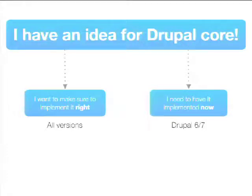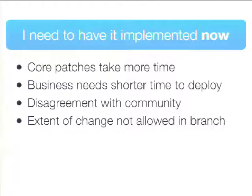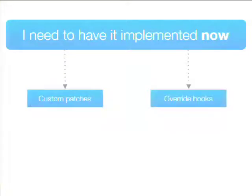The 'implement now' scenario applies if you don't have time for the core development process — you found an issue on your site and need it fixed right now, your business needs a shorter time to get fixes in, you have a huge disagreement with the community and there's no way to make it work, or the extent of the change is not allowed in the version you're working with. If you at first seem like you want to go this way, it might be a very fine decision, and you might be able to come back to the community with your improvements.